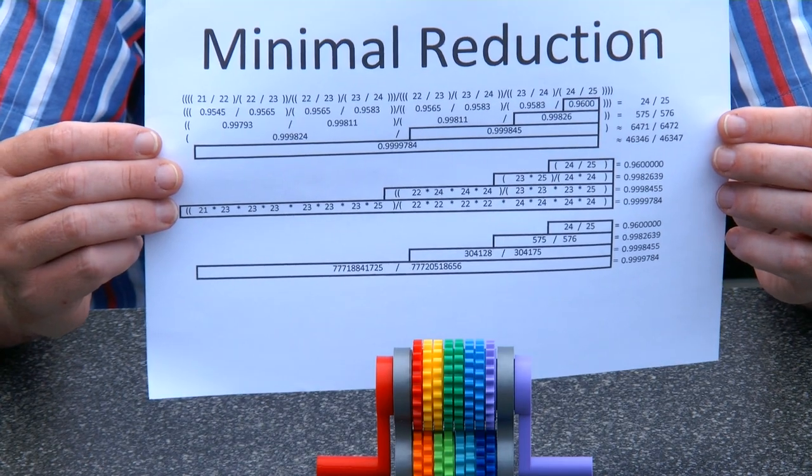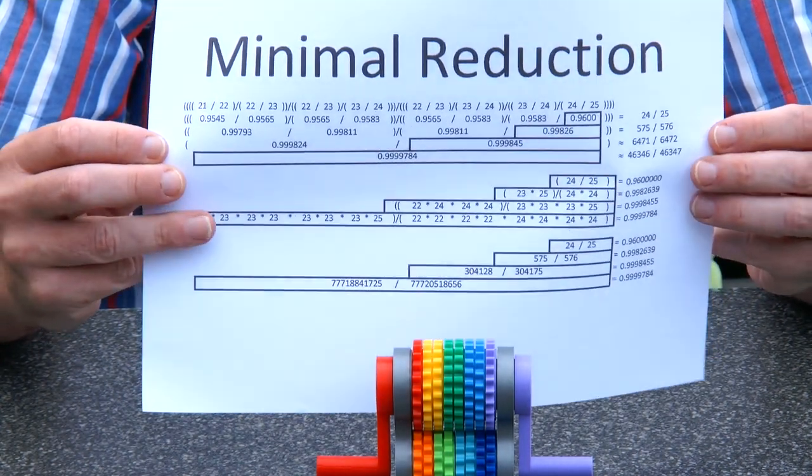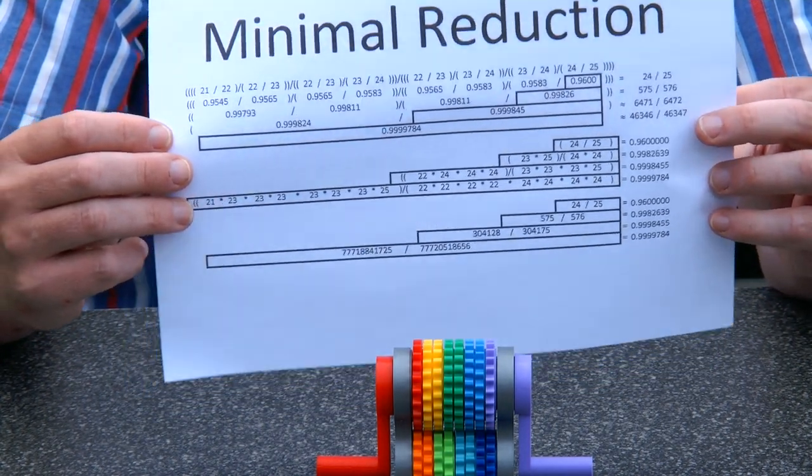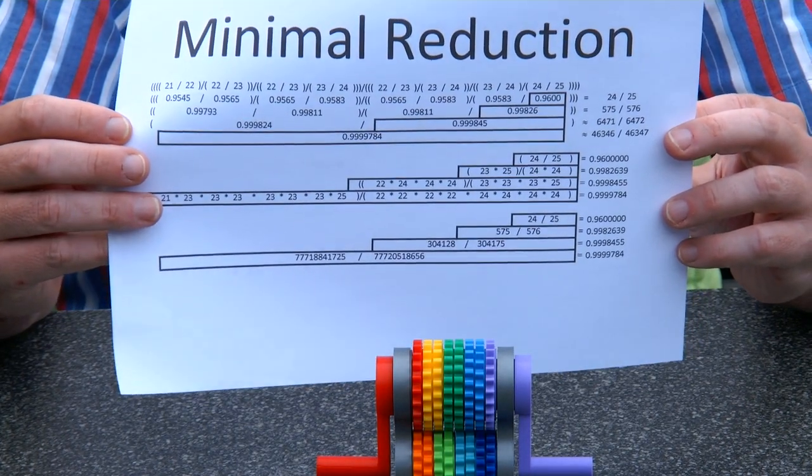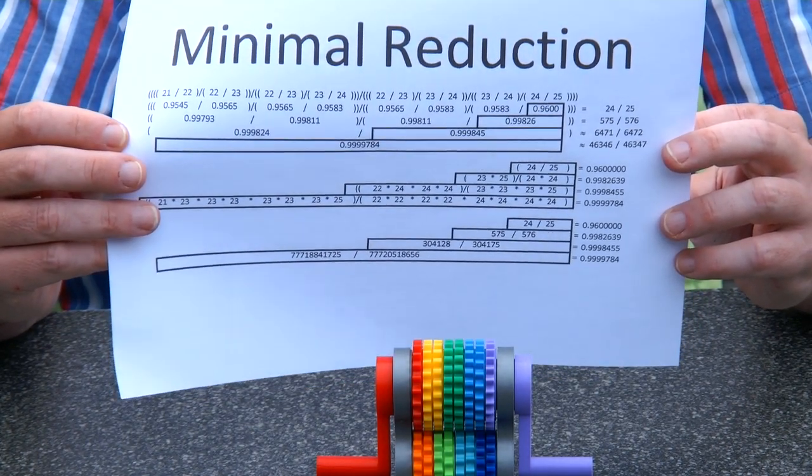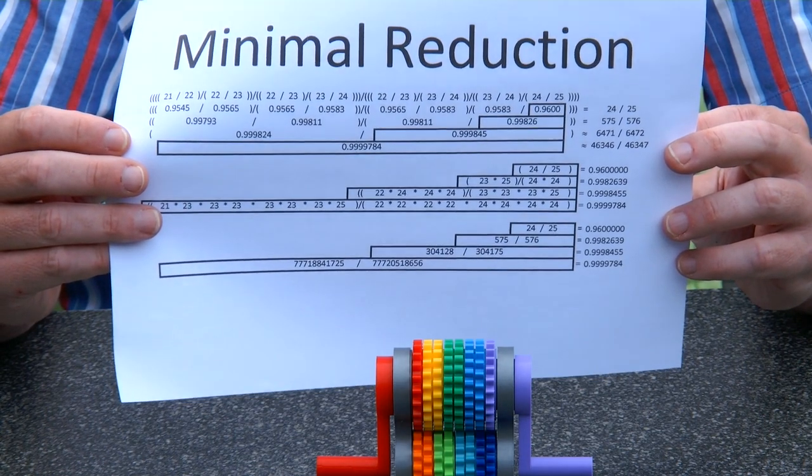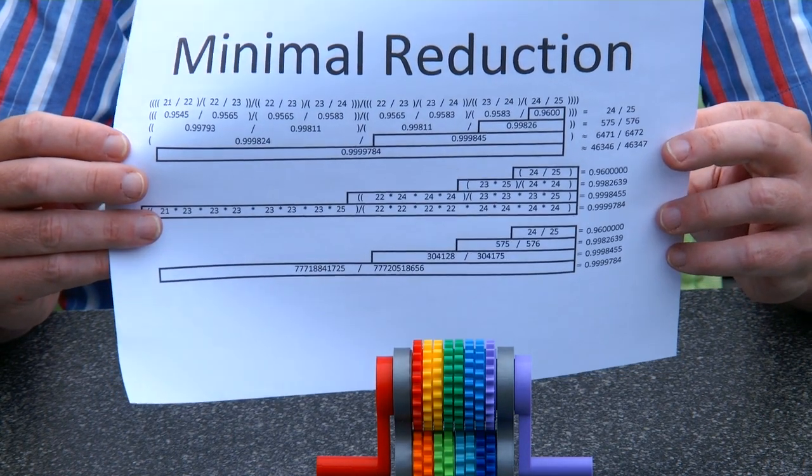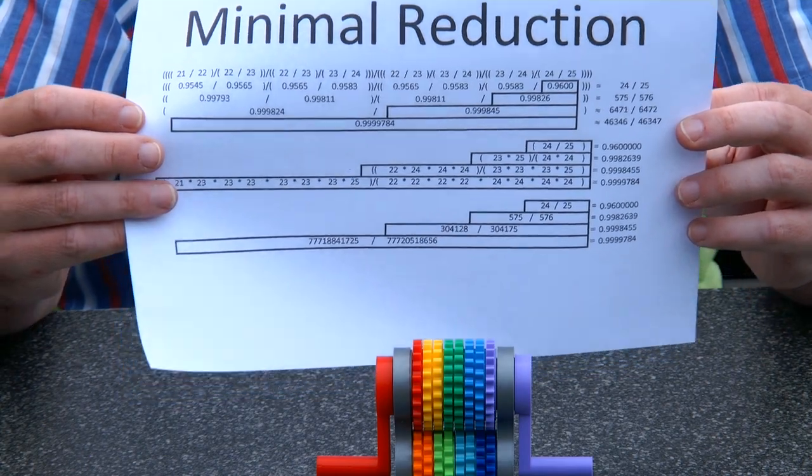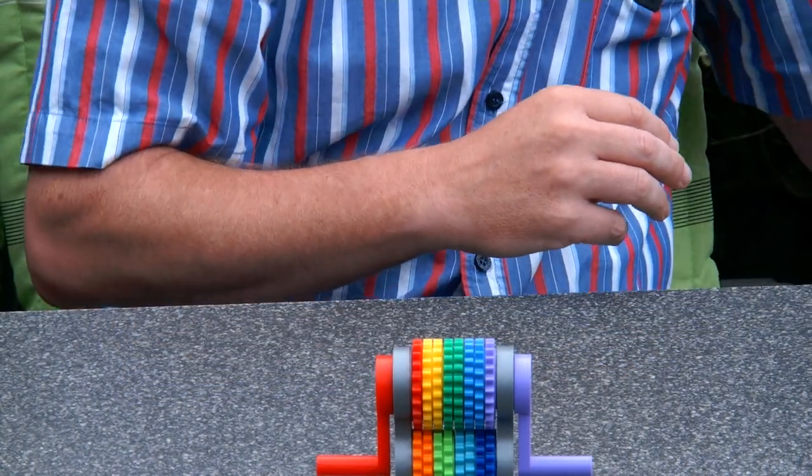Well, I've repeated this process two more times, and the result is a minimal gearing reduction that is 0.999978, which is ridiculously close to 1. So that's the thing that you're seeing here.